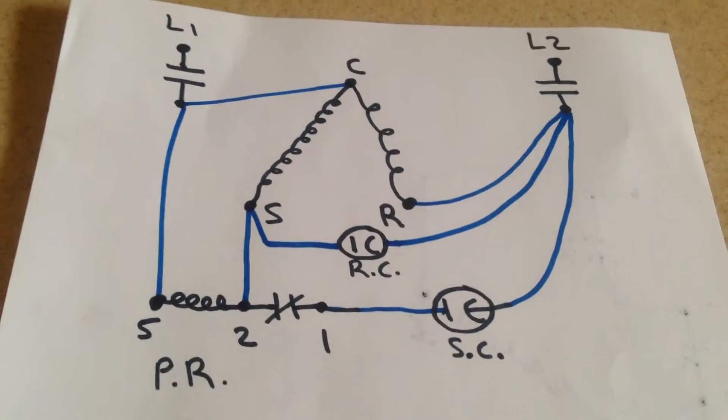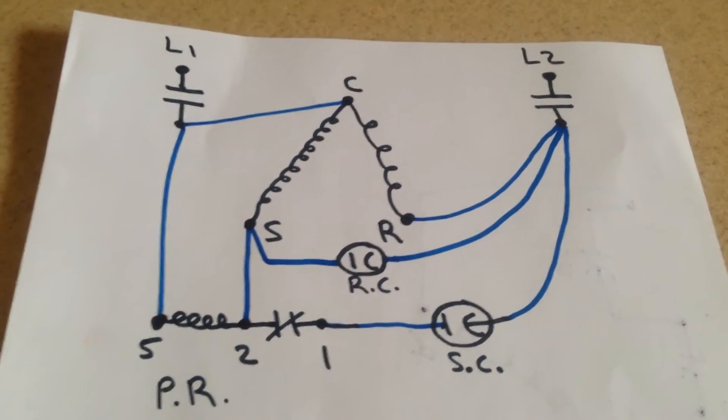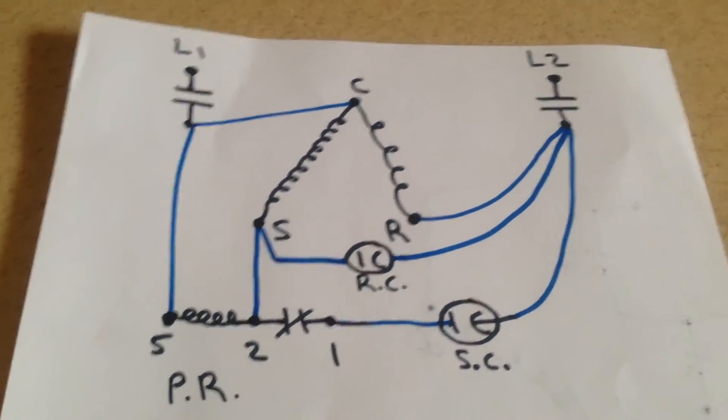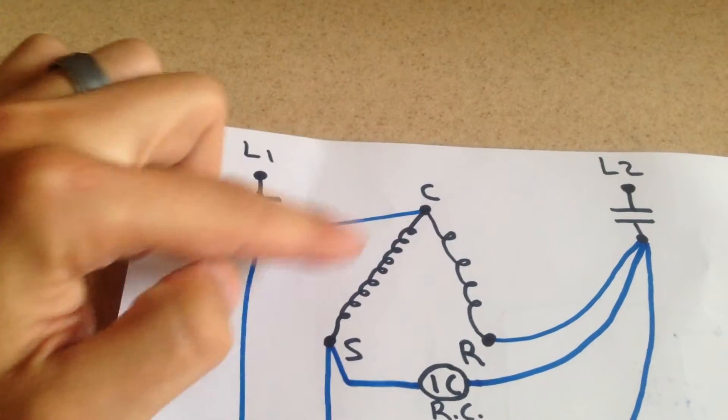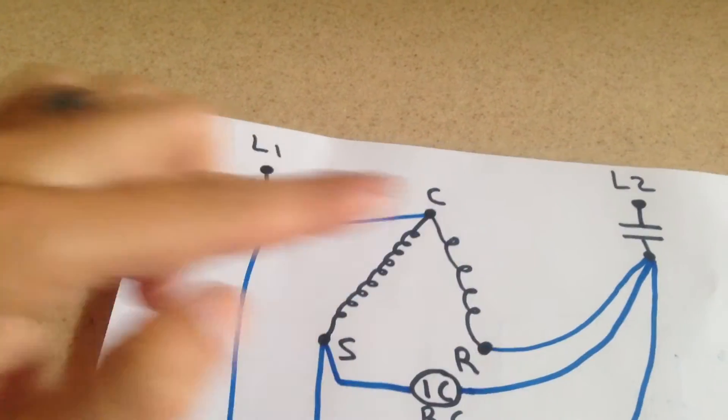Okay, now we're going to illustrate on paper the electrical diagram for our compressor. So here's our compressor in the center with its common, start, and run connections.